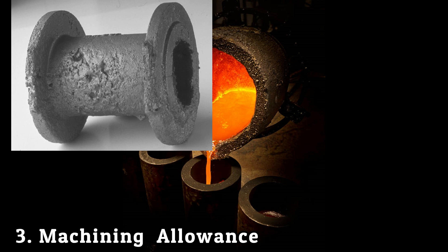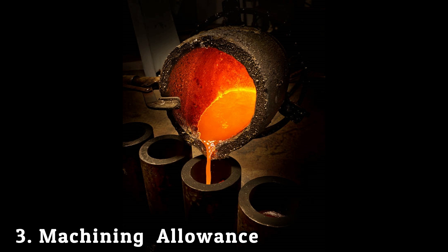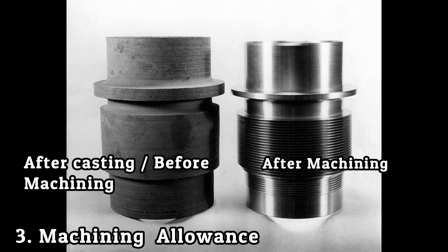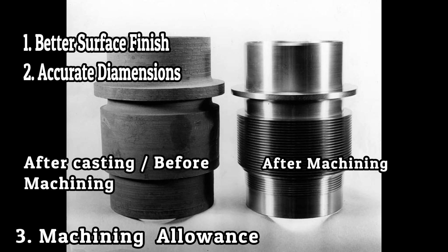Also, the pattern is made manually, which does not produce accurate angles and dimensions of mating parts. But we need a properly finished and dimensionally accurate casting. To avoid these problems, castings are made slightly larger, and after solidification, machining is done on them for better surface finish and accurate dimensions. This change in dimension of casting is known as machining allowance.